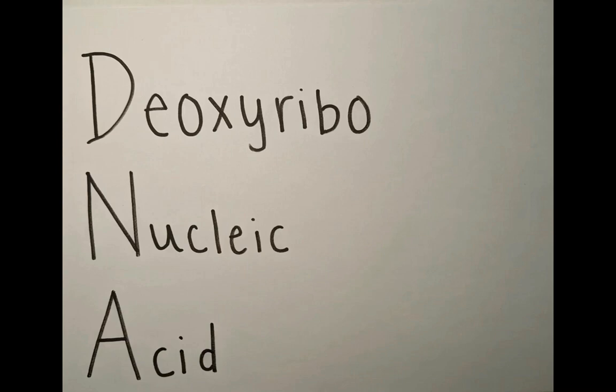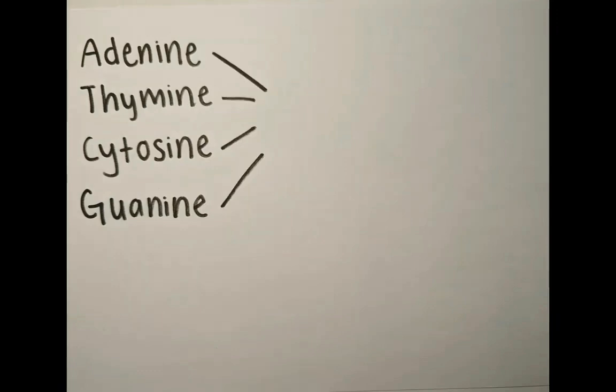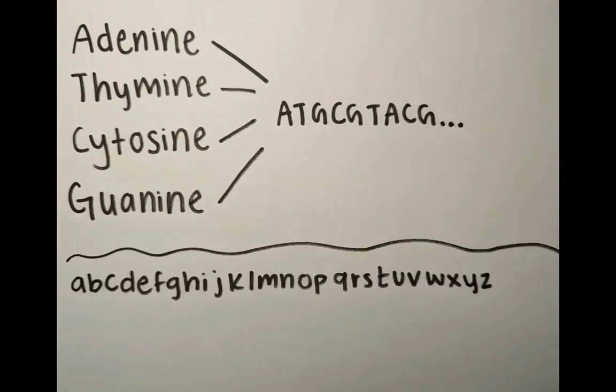Adenine, thiamine, cytosine, and guanine. And even though there's only four different bases, the order of the bases helps to identify information that's able to build an organism. So just like the alphabet — even though there's only 26 letters — the way they're structured helps figure out what word or phrase you may be saying.